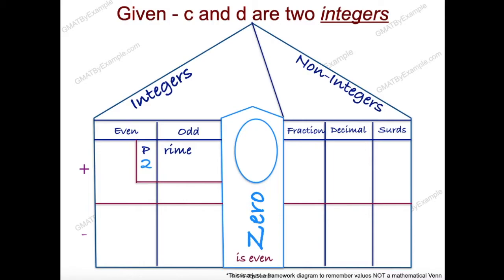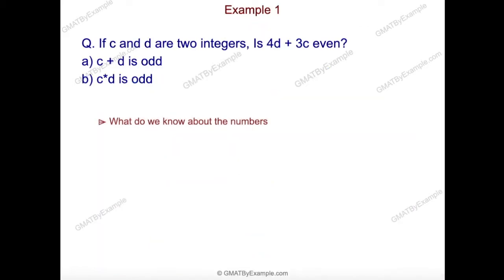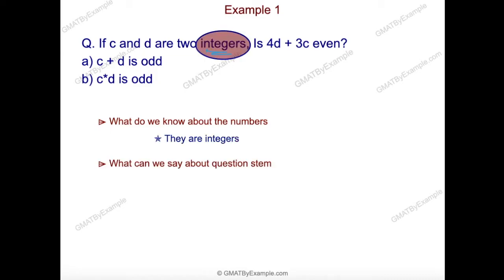Applying the secret Number House Framework: c and d are given to be two integers, so I can clearly block out the right-hand side of the house. I am left with the integers portion, which means I have to consider even and odd values, positive and negative, and also zero — which is even, but we keep it as a separate quantity because it can lead to certain traps in GMAT.